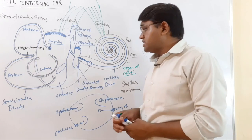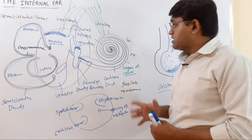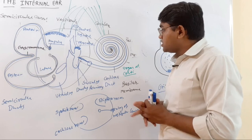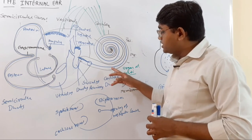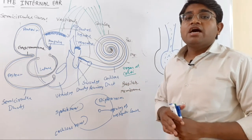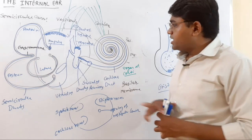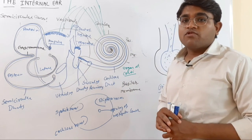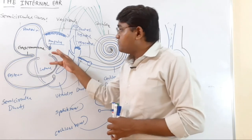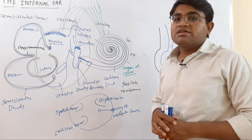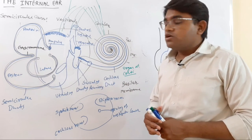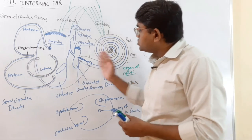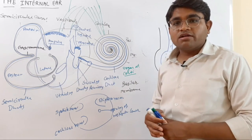To summarize, there are three different types of receptors in the internal ear: the organ of Corti, which is the receptor for hearing; the maculae, which are the receptors for static balance; and the cristae, which are the receptors for kinetic balance. These three receptors are present in the three structures of the internal ear.